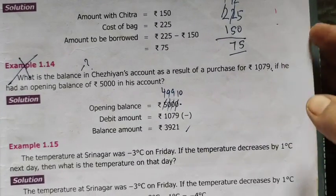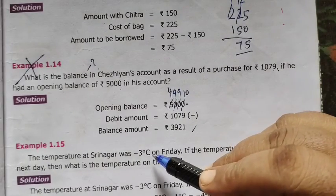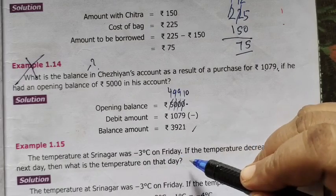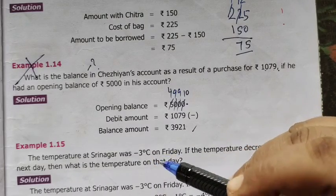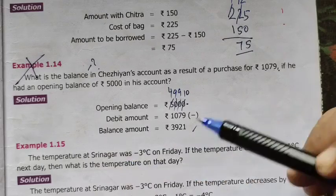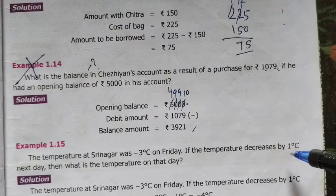Example 1.15. The temperature at Srinagar was minus 3 degree centigrade on Friday. Friday, minus 3 degree centigrade.